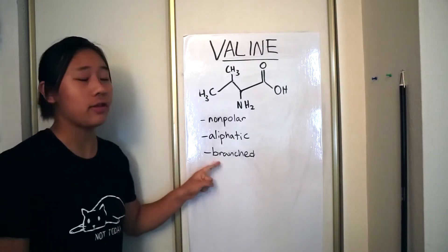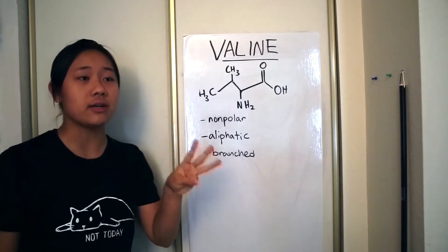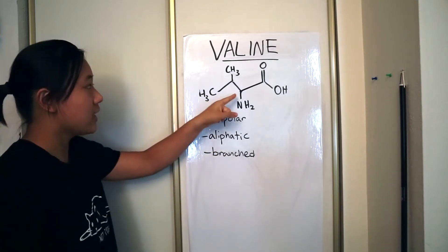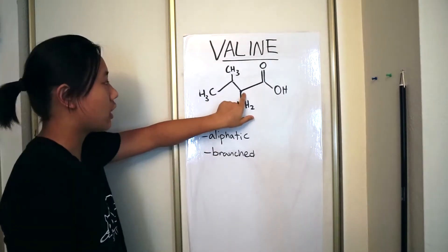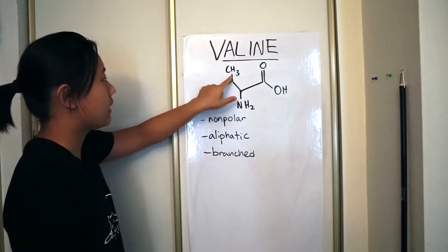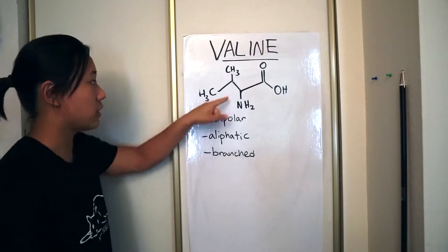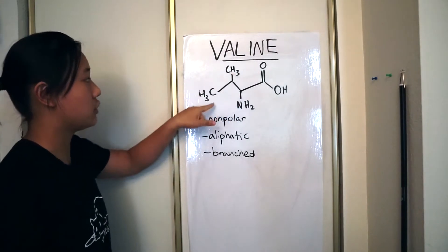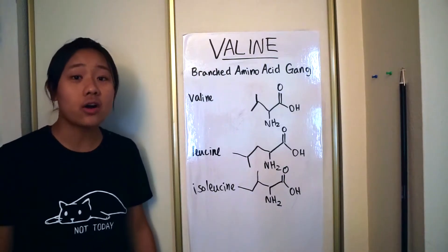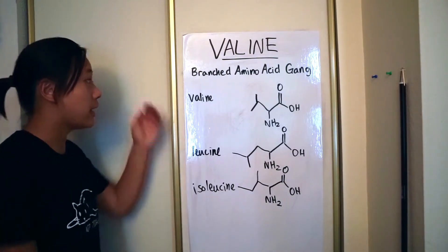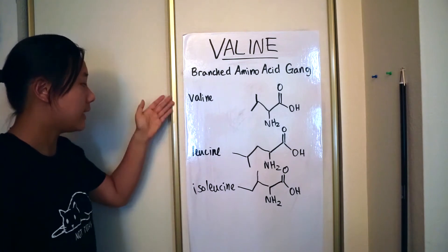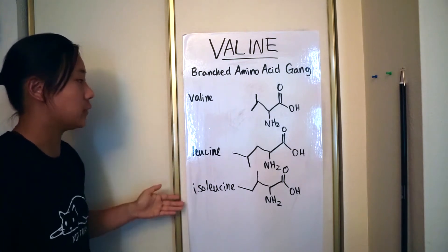This is one of the three branched amino acids. You can see the side chain here. The central carbon is going to be right here, and here is the side chain branched. It has two methyl compounds. And here are the three branched amino acids: valine, leucine, isoleucine.